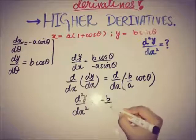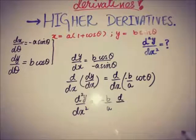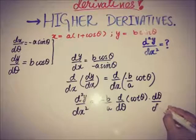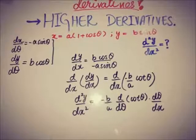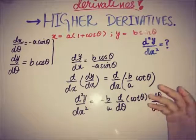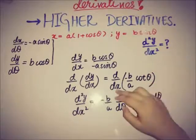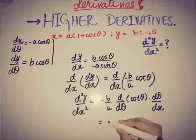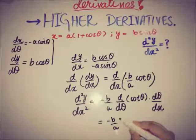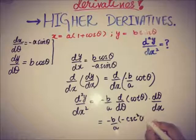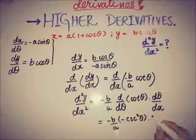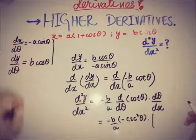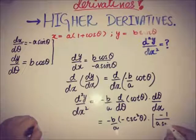Since theta depends on x, we must apply the chain rule again: d/dx of cot(θ) = (d/dθ of cotθ) · (dθ/dx). The derivative of cotθ is −csc²θ. So d²y/dx² = −(b/a) · (−csc²θ) · (dθ/dx). The value of dθ/dx is the reciprocal of dx/dθ = −a sinθ, giving dθ/dx = −1/(a sinθ).